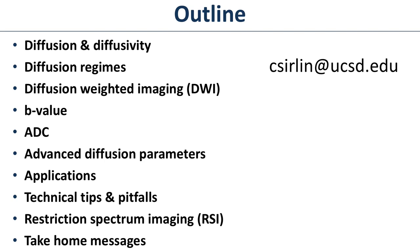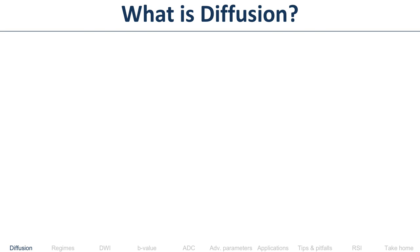The outline: we're going to talk about diffusion and diffusivity, diffusion regimes, diffusion-weighted imaging, the B value, the apparent diffusion coefficient, more advanced diffusion parameters such as those being developed by Anders, applications of DWI, technical tips and pitfalls. Then I'll introduce restriction spectrum imaging (RSI) and conclude with take-home messages.